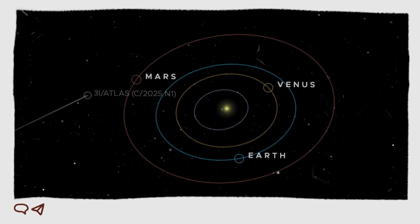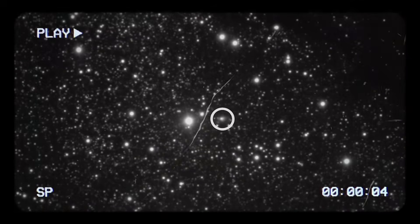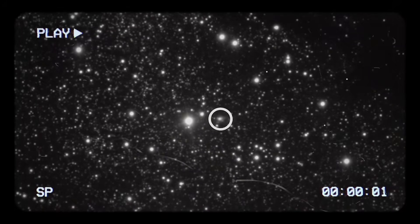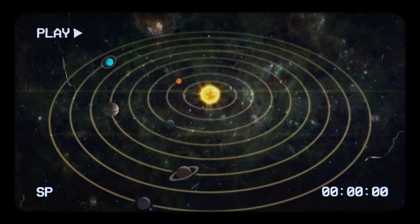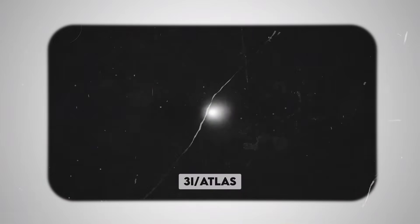Right now a fleet of NASA spacecraft are turning their attention to an unusual object speeding through our solar system. Every now and then the universe sends us a message, and right now a visitor from a completely different star system is racing through our cosmic neighborhood and it has just revealed one of its biggest secrets.